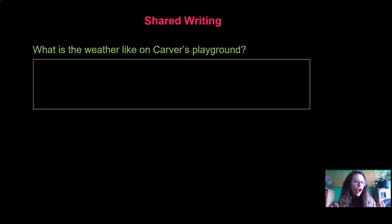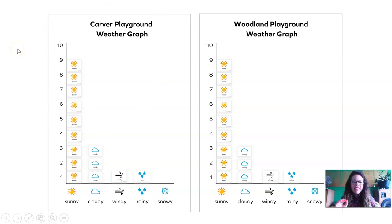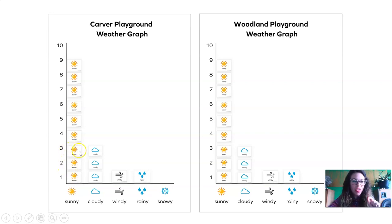Here's the first question: what is the weather like on Carver's playground? Let's look back at the data — here's Carver's playground weather graph. How many sunny days were there? Let's count them again together: one, two, three, four, five, six, seven, eight, nine. So there were nine sunny days.